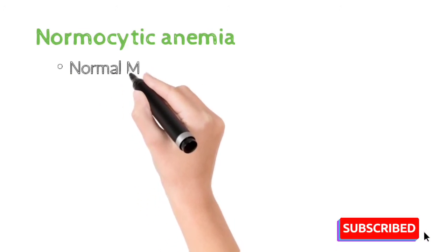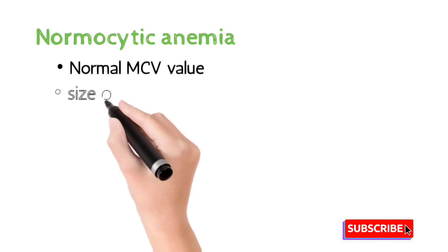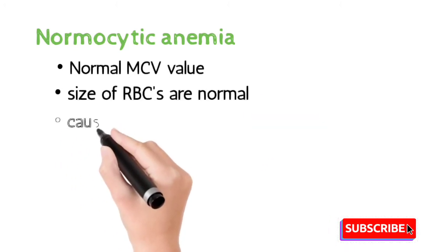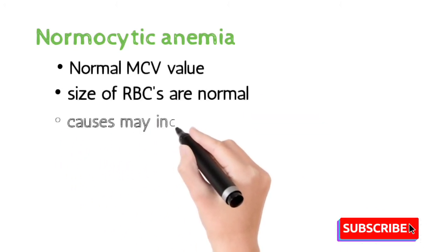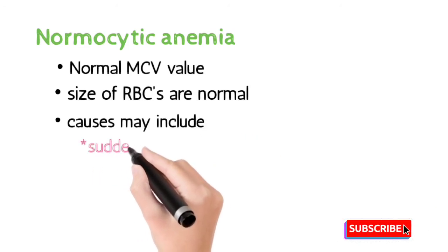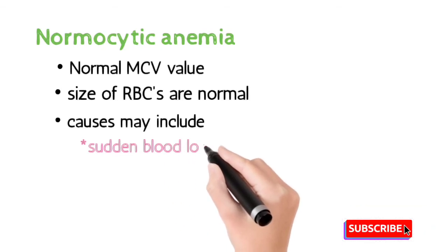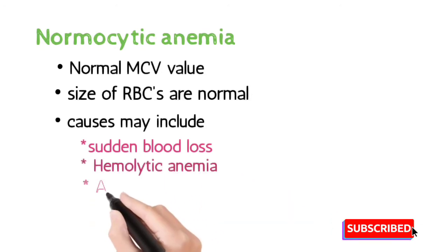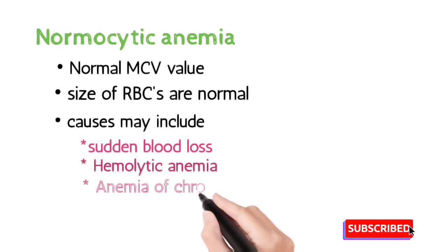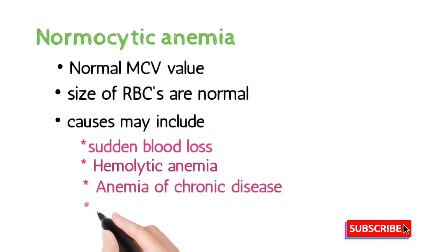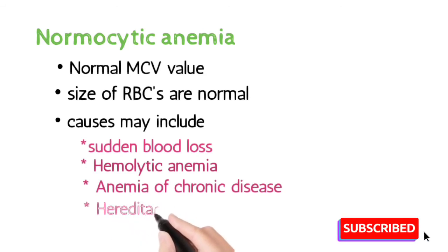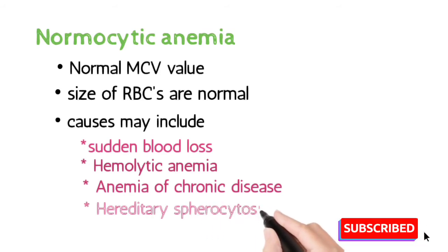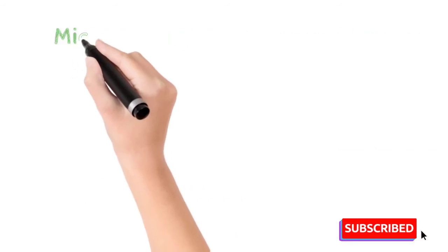Number one is normocytic anemia. During this condition, the MCV value is normal and the size of RBCs is also normal. Conditions included in normocytic anemia are: sudden blood loss, during which blood is lost but there is no change in shape or size of RBCs; hemolytic anemia, involving blood loss or lysis of RBCs; anemia of chronic diseases; and hereditary spherocytosis.